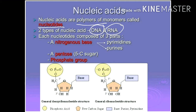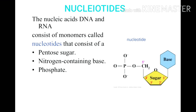Now, what are these nucleotides? Nucleotides, which are polymerized to form nucleic acid, are made up of three things: first is pentose sugar, second is nitrogenous base, and third is phosphate group. So a nucleotide means the combination of pentose sugar, nitrogenous base, and phosphate group.